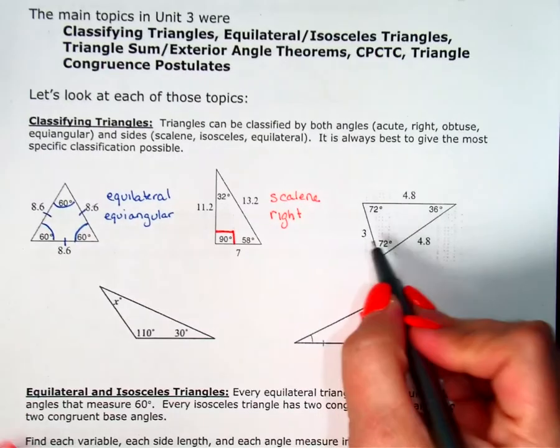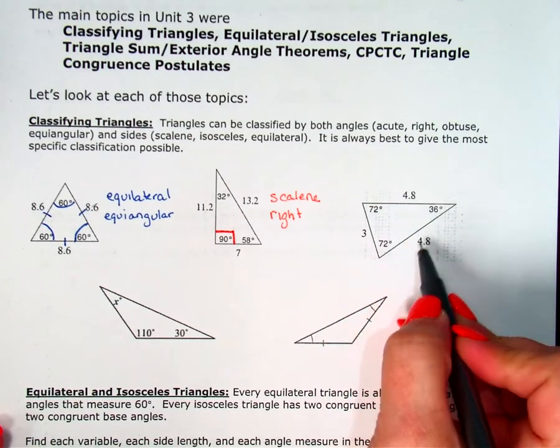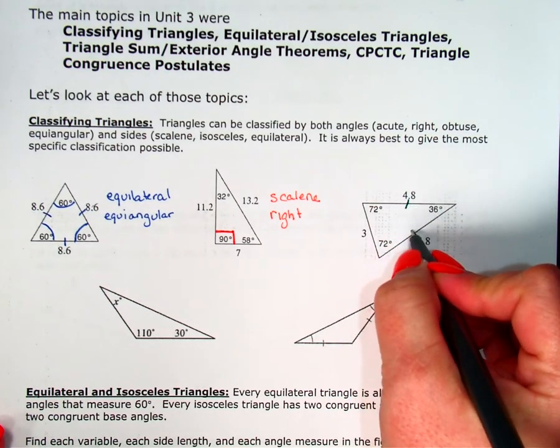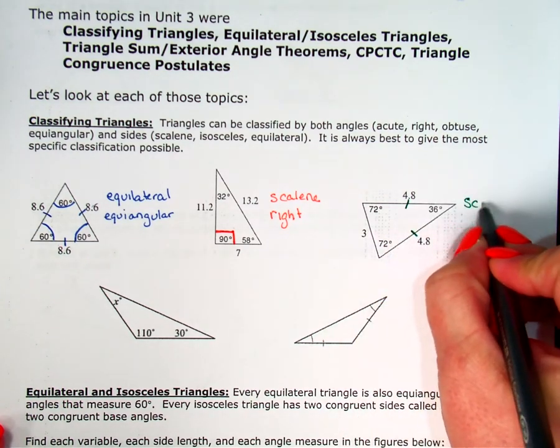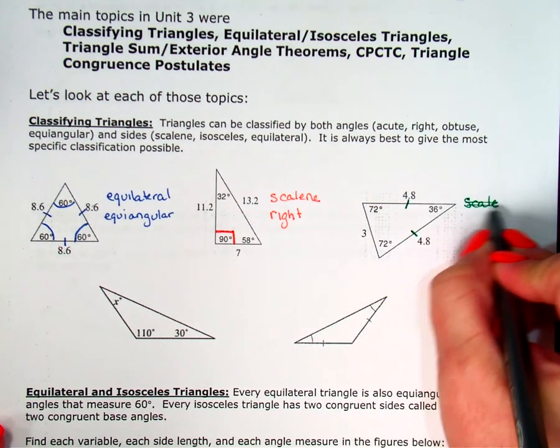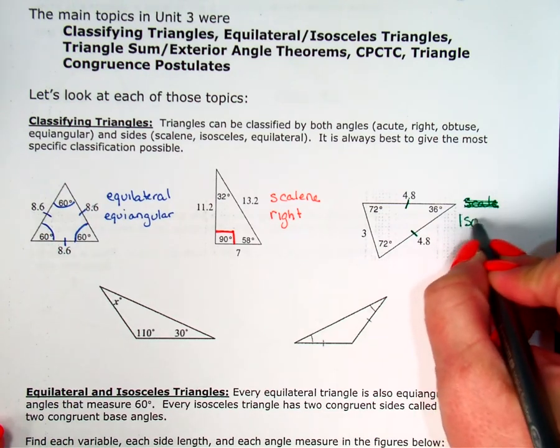When I look at the third one, I have a side that's 3, and then two sides that are 4.8. So these two sides are the same. So since I have two sides the same, this is scalene. Or sorry, I lied. This one is isosceles.